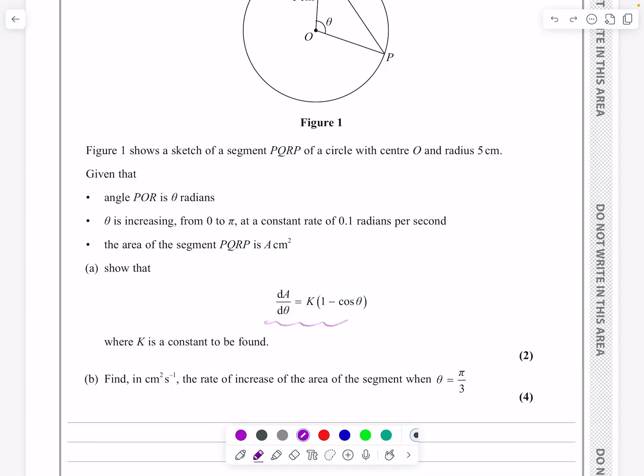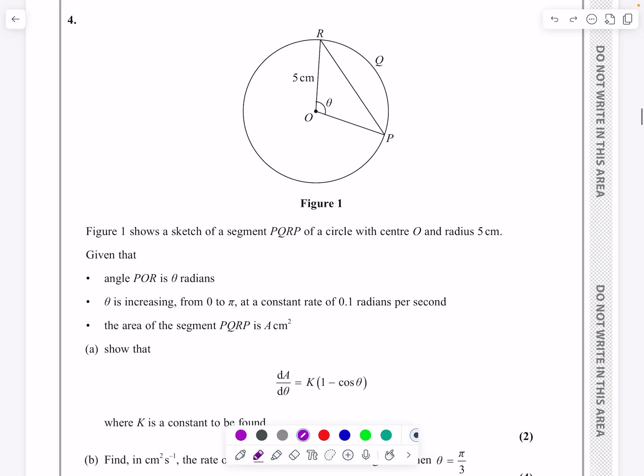and you can see if you read through that we've got a rates of change question here. We're going to be asked to show dA by dθ, where A is going to be the area of a segment. So first of all, we need to work out the area of that segment.